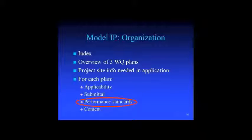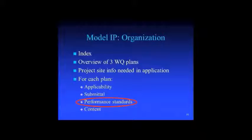The organization of our model IP includes an index that refers to row numbers so you can quickly find the right place in the document. We have a quick overview of the three water quality plans, a section for project site information needed in the application to evaluate water quality impacts, and then for each of the three plans, sections for applicability, submittal requirements prior to permit issuance, performance standards — which is our focus today — and content showing how you've met those performance standards.